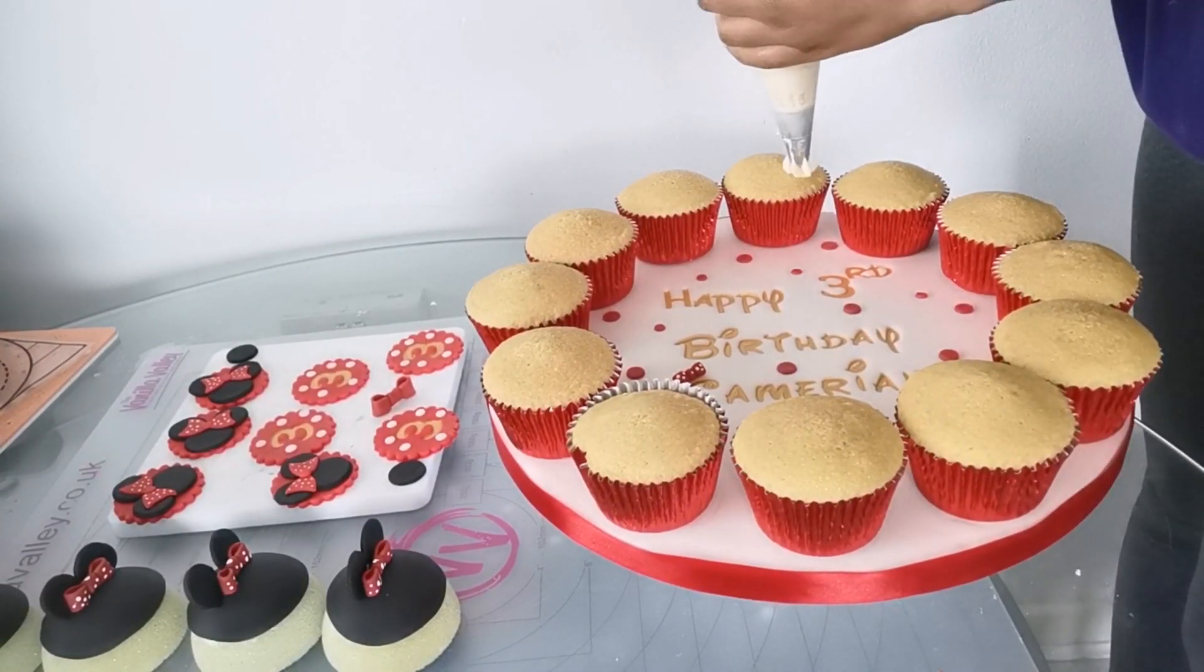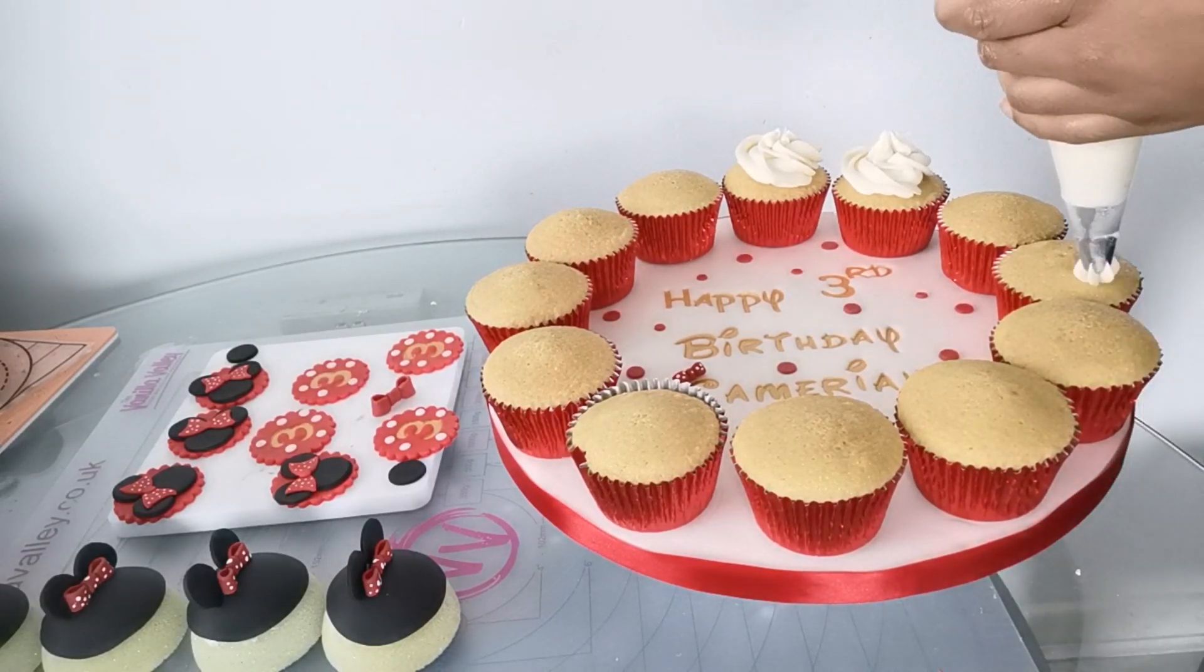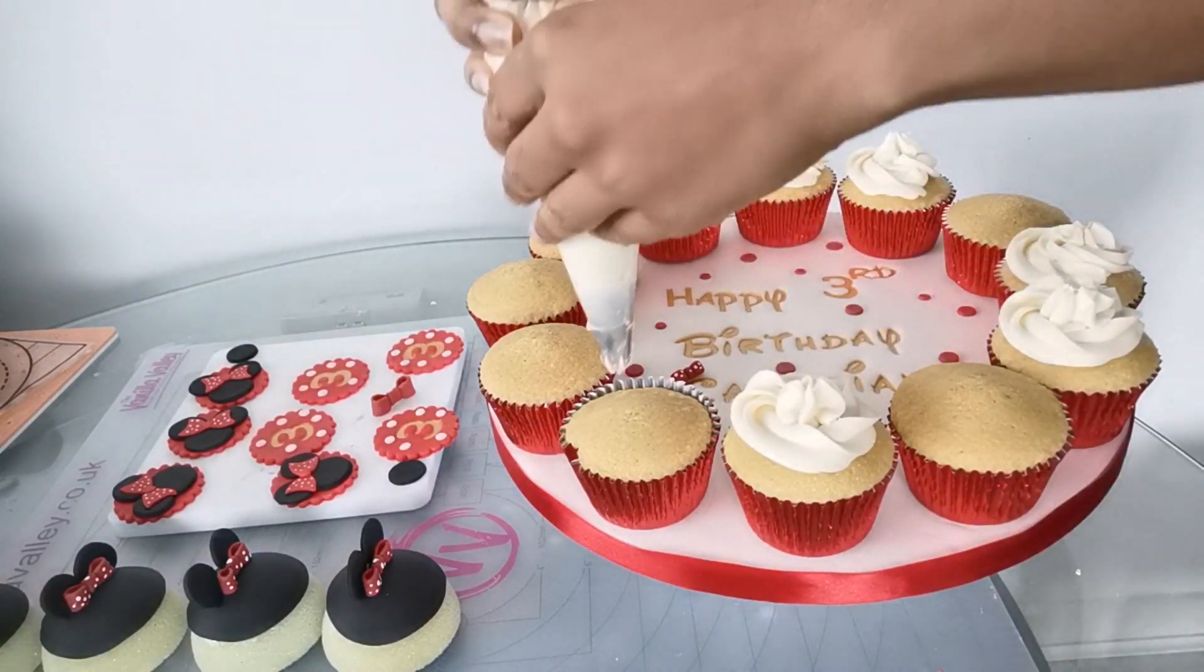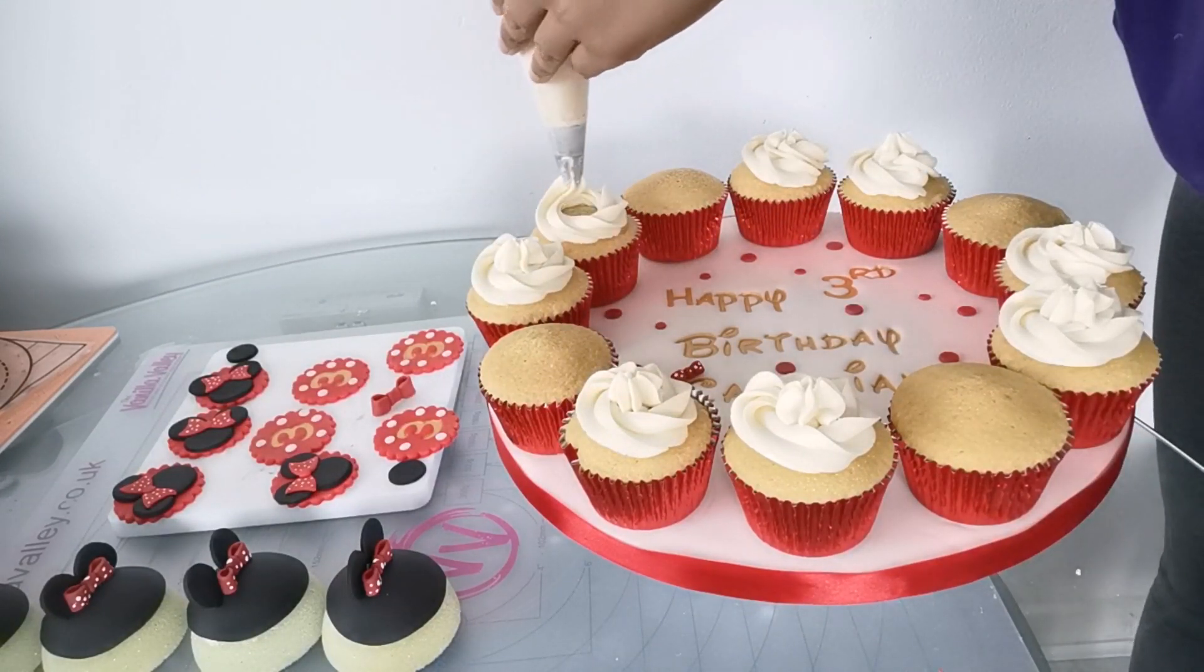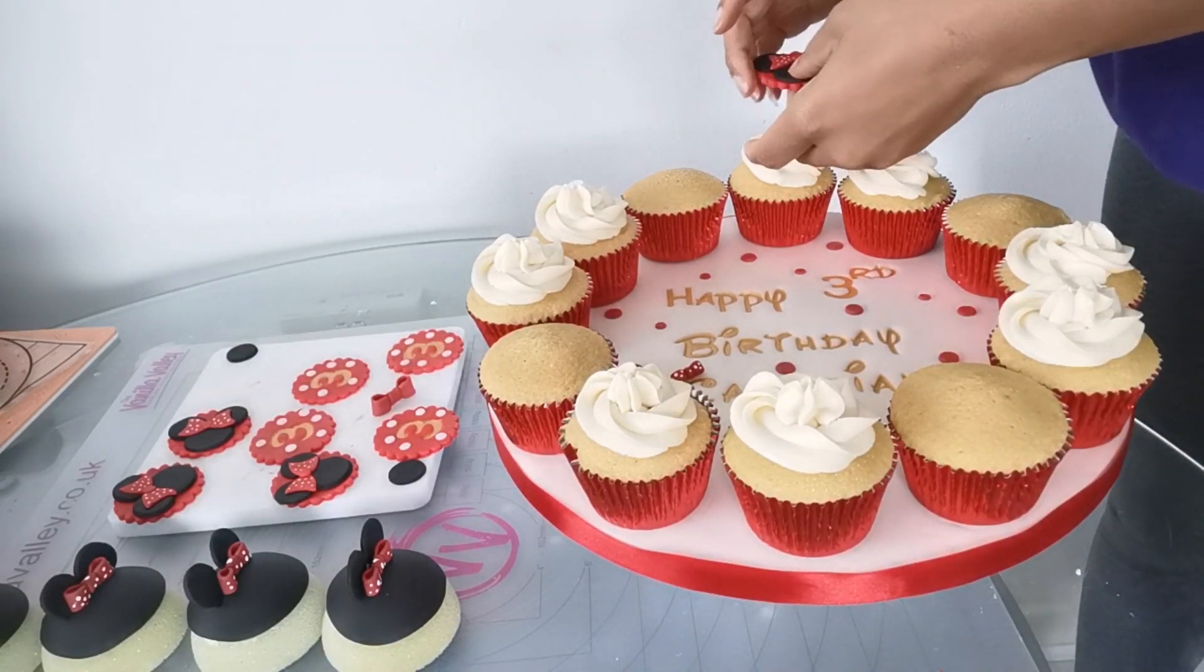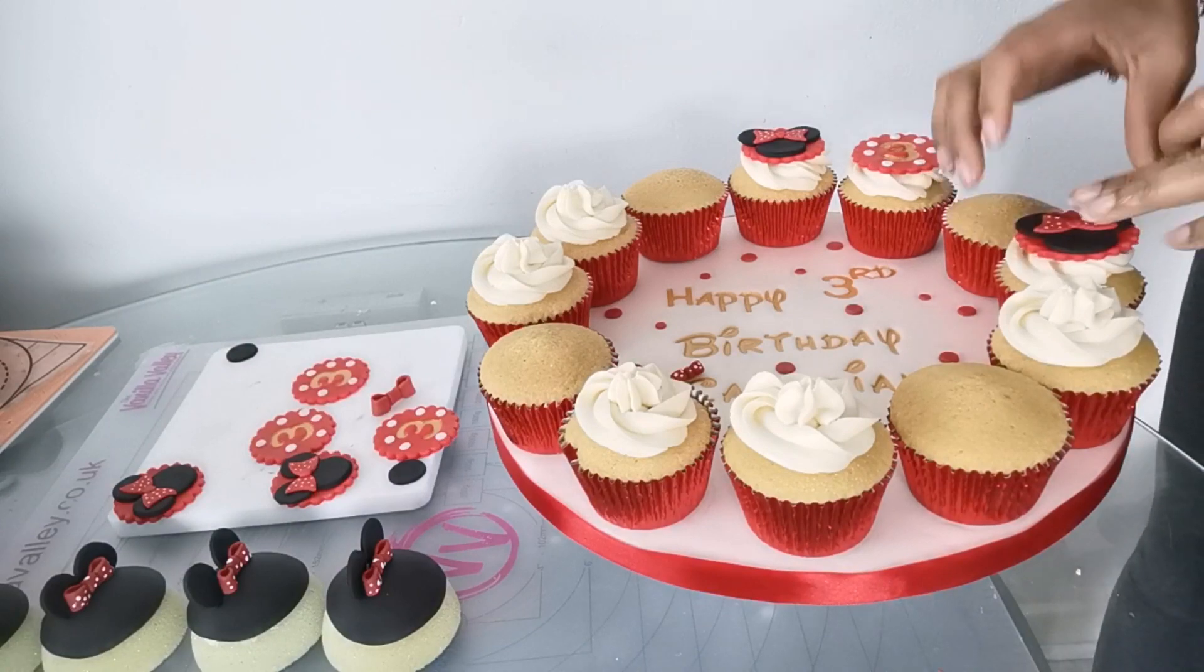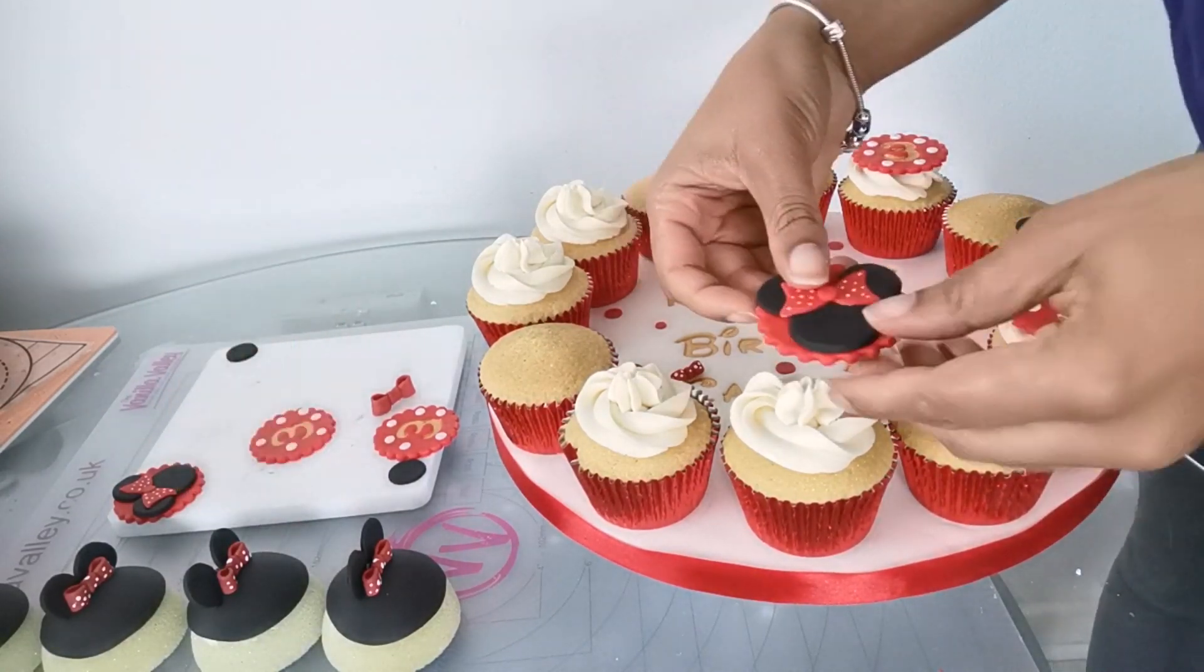Now I'm using the same buttercream to decorate the cupcakes, which I'm then going to put the toppers on. I started doing the flat toppers because I wasn't sure how much buttercream I would need for the domed toppers. That's why you can see that I have left out one. I start by putting the flat toppers first. Once I do that, I put a little bit more buttercream on the other cupcakes so the domed toppers can fit nicely on top.